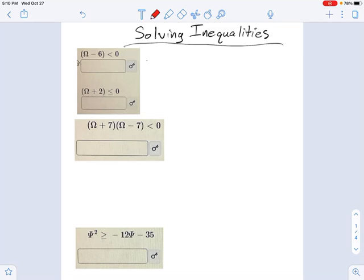Before we get into solving rational inequalities, it's helpful to talk about polynomial inequalities. In other words, simple things like this one: (x + 7)(x - 7) < 0. I just want to remind you how inequalities work in general.